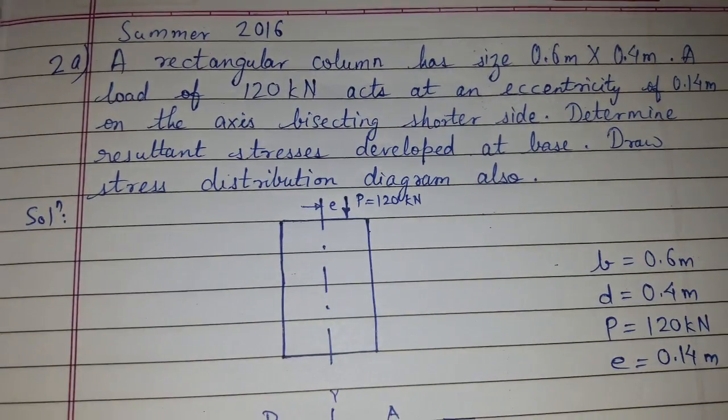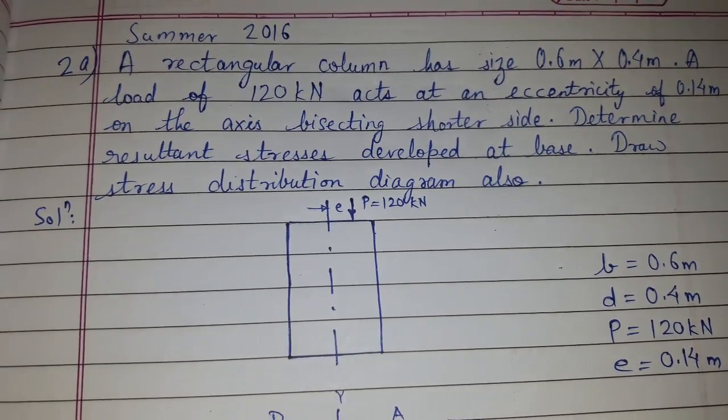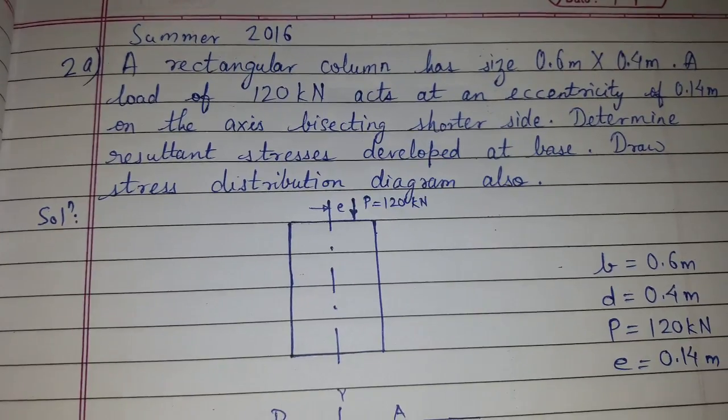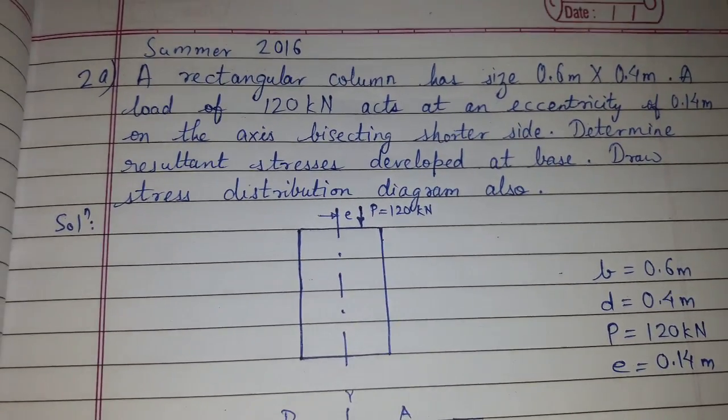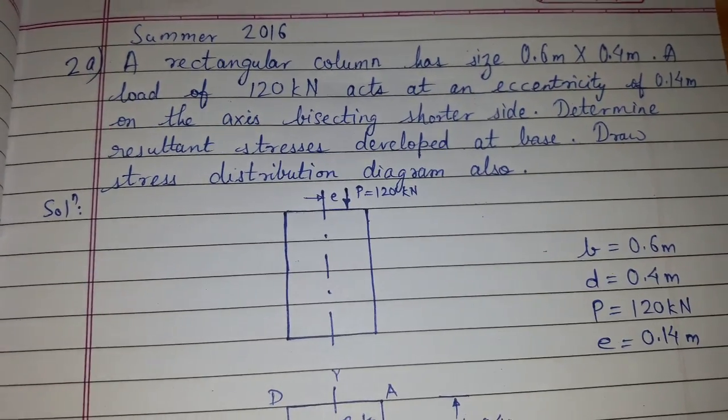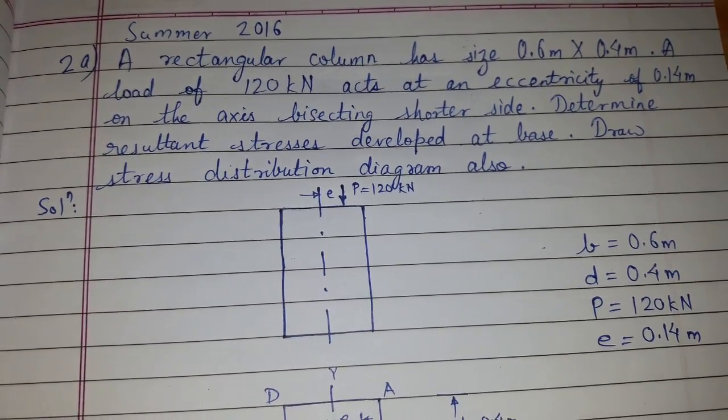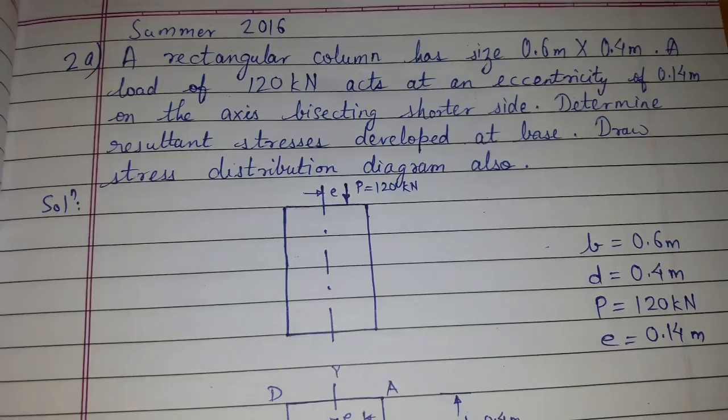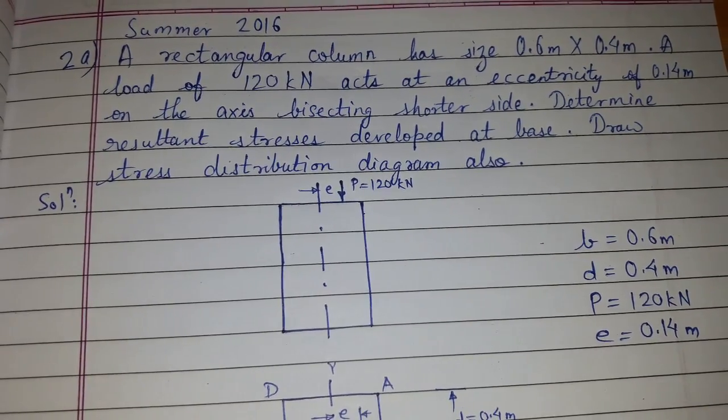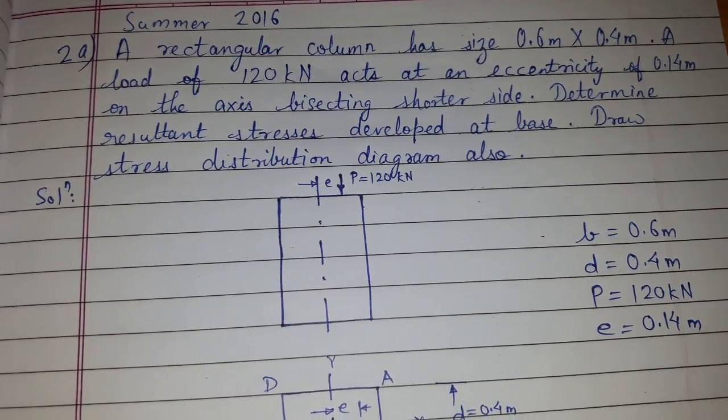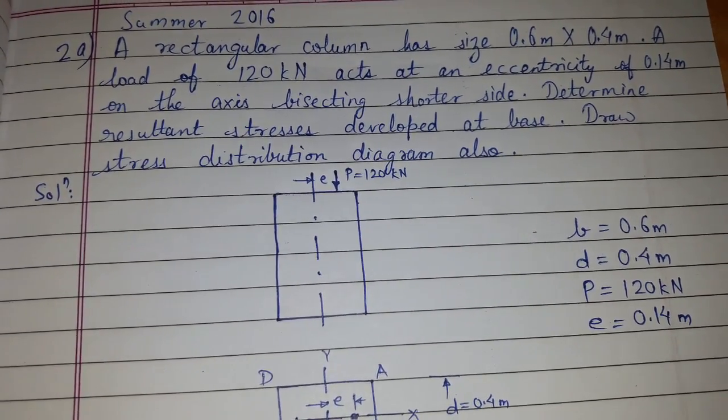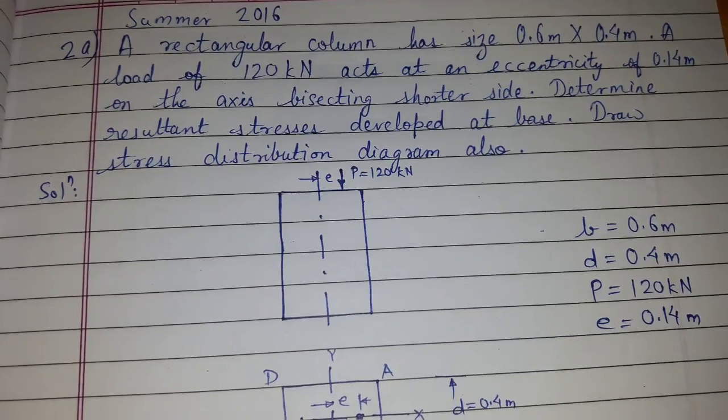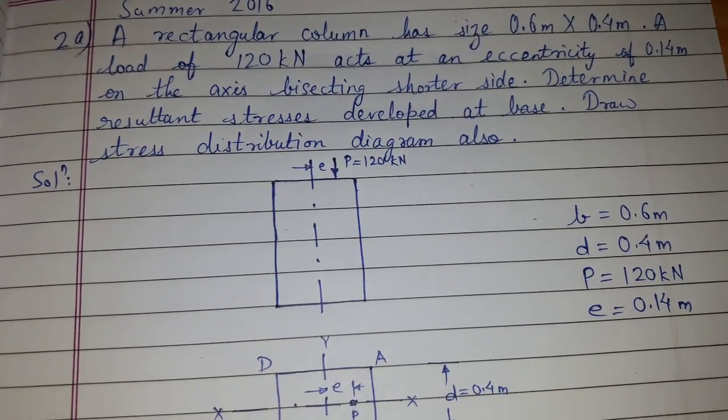Today's topic of discussion is a problem which was asked in an earlier examination. This problem is related to the chapter direct and bending stresses. A rectangular column has size 0.6 meter by 0.4 meter. A load of 120 kN acts at an eccentricity of 0.14 meter on the axis bisecting the shorter side. Determine resultant stresses developed at base. Draw stress distribution diagram also.